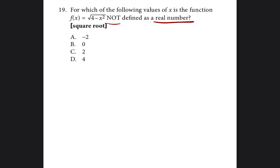What is not a real number in this case? If you end up getting a negative number underneath the square root, it's not a real number. So what we have to do is plug in every one of those answer choices into the equation to see which one leaves us with a negative number under the square root. I don't know of another way around this — if you do, please let me know.